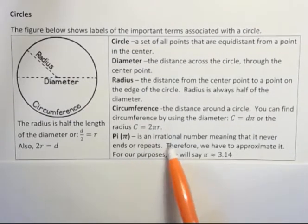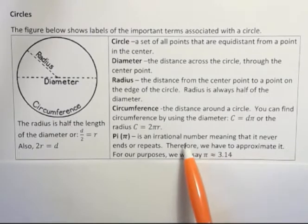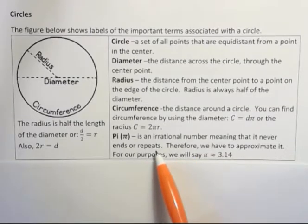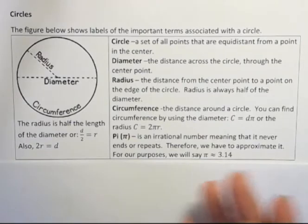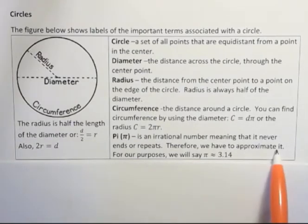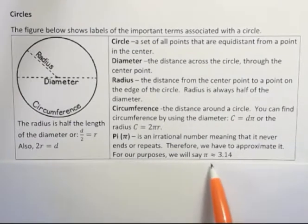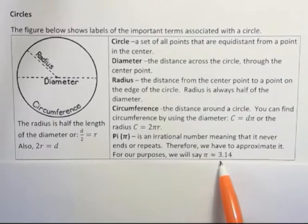And then we have pi, which is an irrational number. And that means that it never ends or repeats. So whenever we talk about pi, if we want to use it for a calculation, we can't use a number that goes on forever. So we have to shorten it or round it, which is actually an approximation then. So for our purposes for right now, I'm going to say we're going to use pi approximately 3.14.